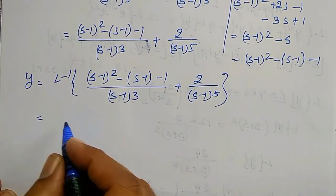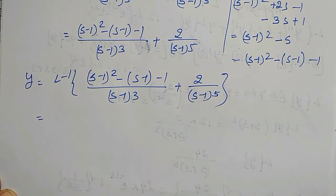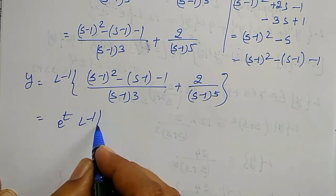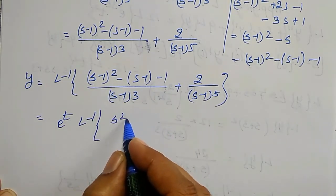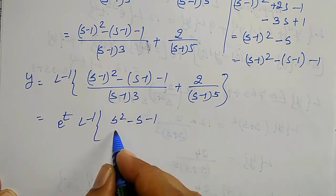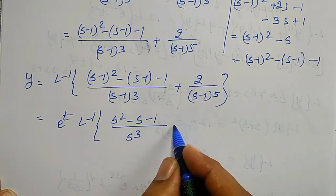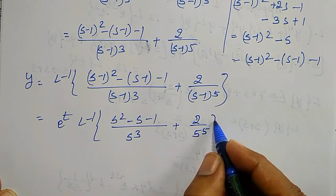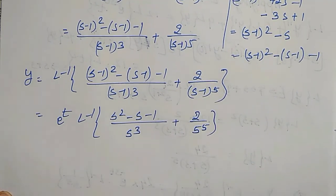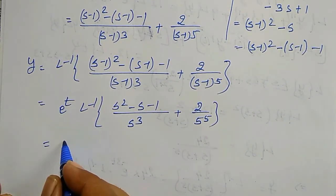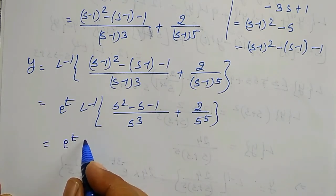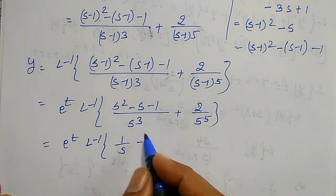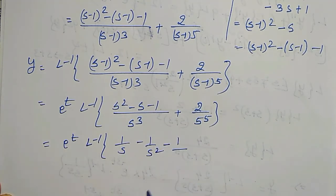Therefore y equals the inverse Laplace Transform of [(s−1)² − (s−1) − 1]/(s−1)³ + 2/(s−1)^5. Splitting the fractions: 1/(s−1) − 1/(s−1)² − 1/(s−1)³ + 2/(s−1)^5. Applying the shifting property, s−1 is replaced by s.